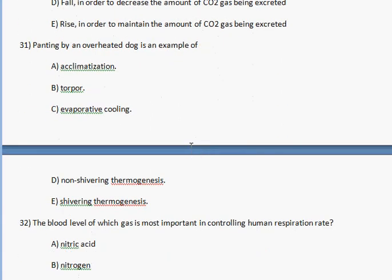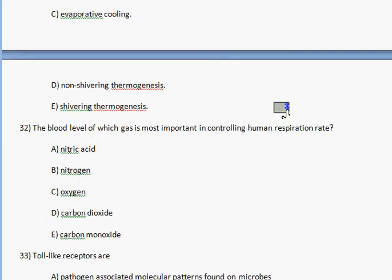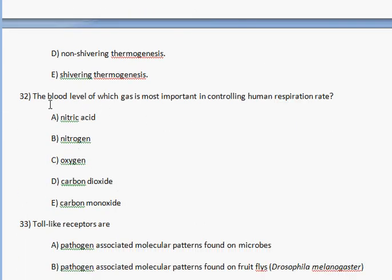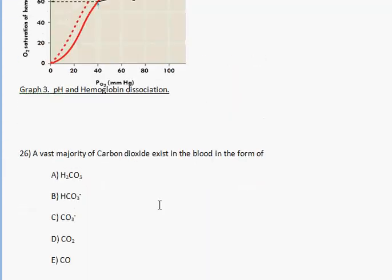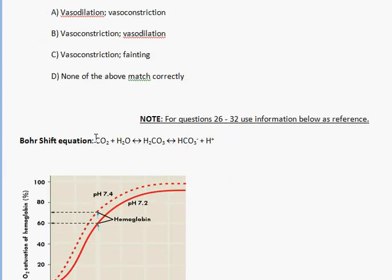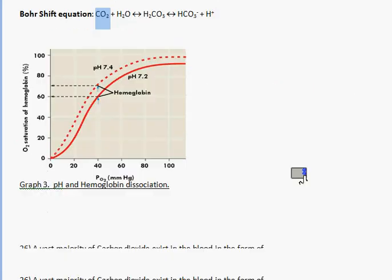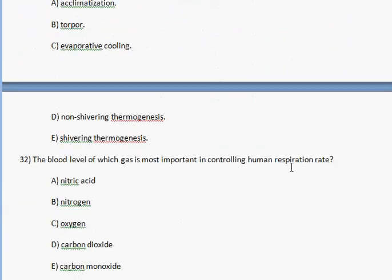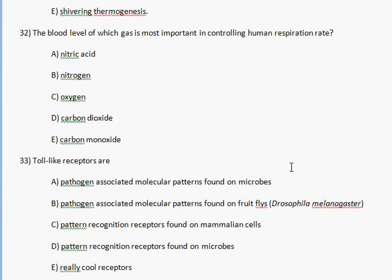Panting by an overheated dog is an example of evaporative cooling — we should all know that. The blood level of which gas is most important in controlling human respiration rate? You have nitric acid, nitrogen, oxygen, carbon dioxide, and carbon monoxide. There is only one gas in the Bohr shift equation for balancing human respiratory rate, and that's CO2. So carbon dioxide is your right answer.